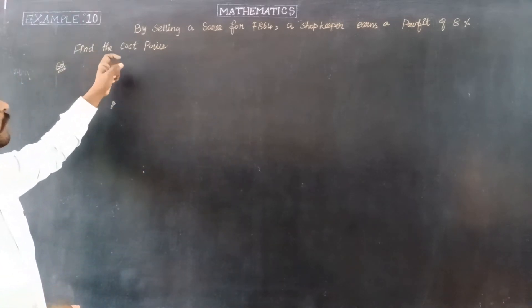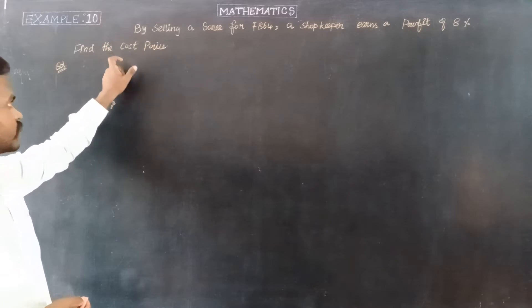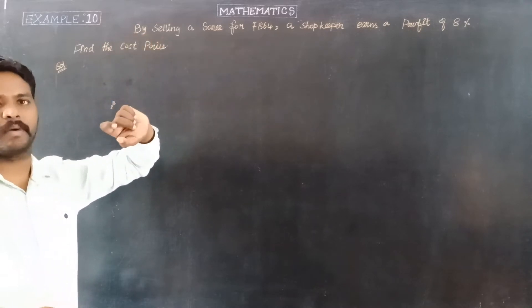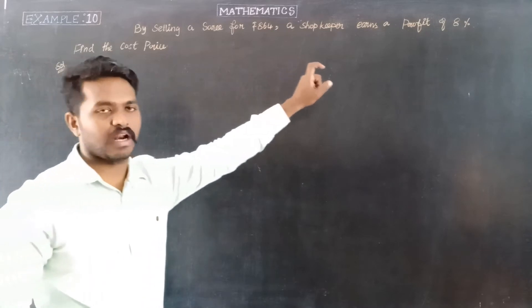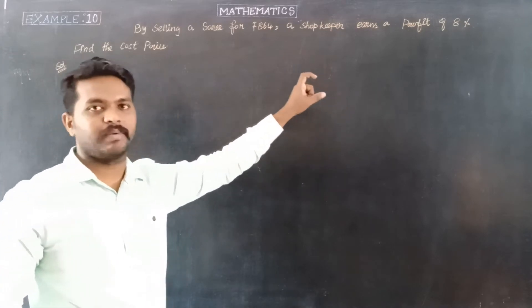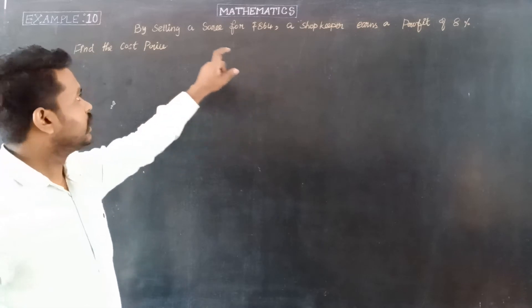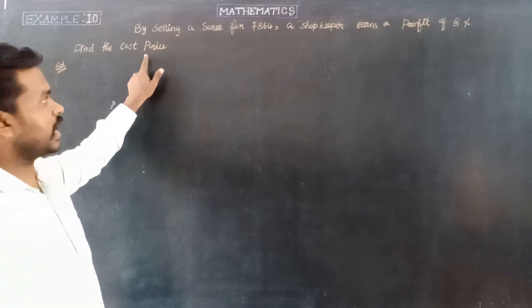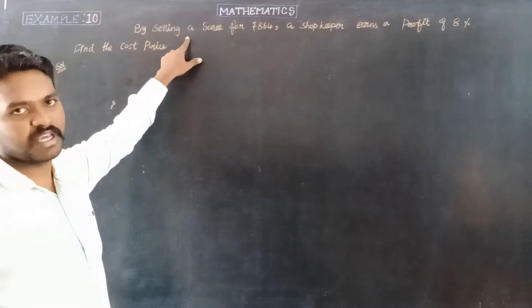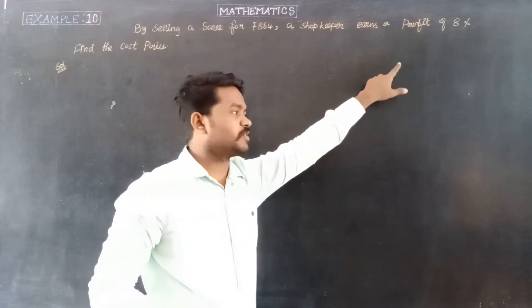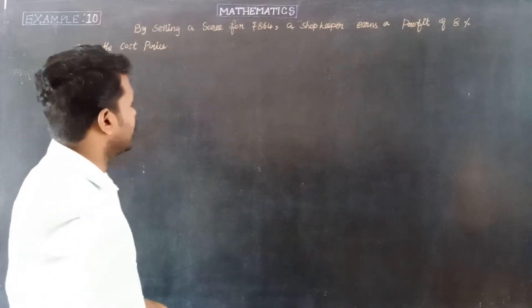We have a formula for finding cost price. Cost price can be found from selling price, profit or loss, profit percentage, and loss percentage using the formula.